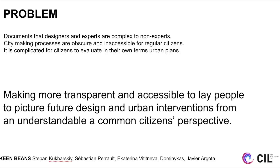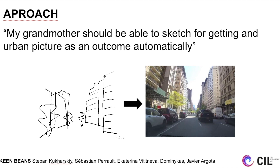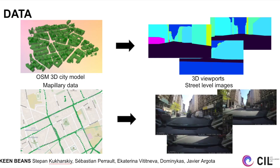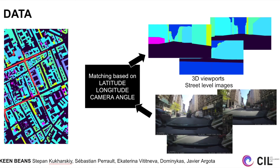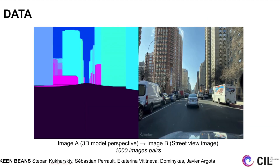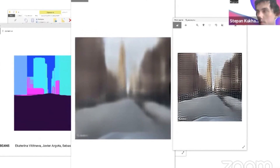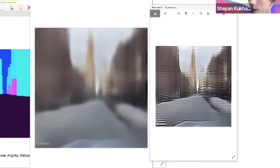Another interesting problem one group tackled was making space understandable for non-architects and non-planners without visualization. At early design stages with only massing models, it's quite difficult to imagine how something might look in the end, and the rendering process takes an immense amount of time. They wanted to take a 3D massing model on a simple perspective and turn it into a photorealistic image using a Pix2Pix model trained with screenshots of a simple massing model combined with street view images from the same area. The first trained model was a bit blurry, so they added a second Pix2Pix model to add details to the blurred first results.